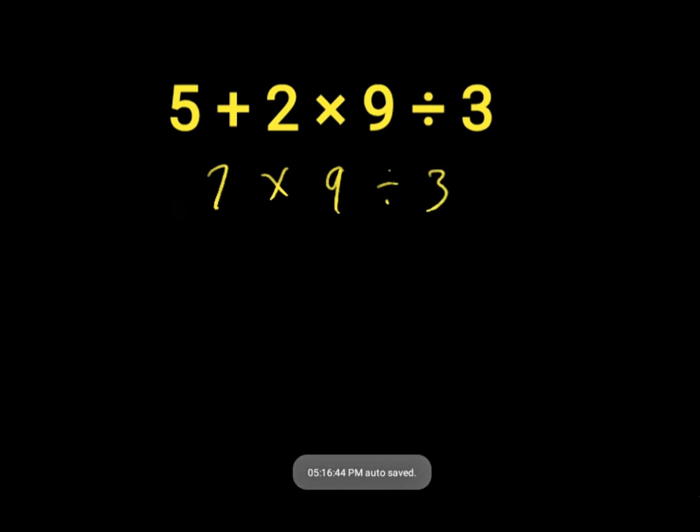7 times 9 will give us 63. Then 63 divided by 3 will give us 21. 21 is the wrong answer to this expression because we did not work with the order of operations.